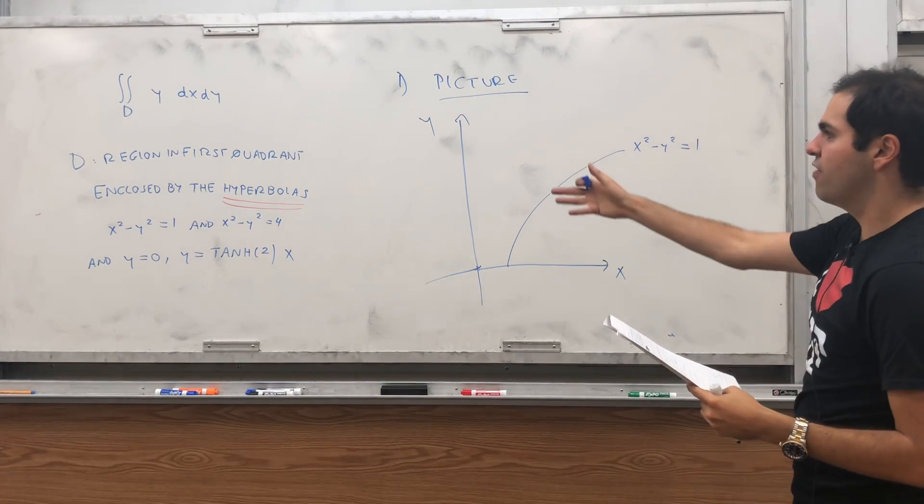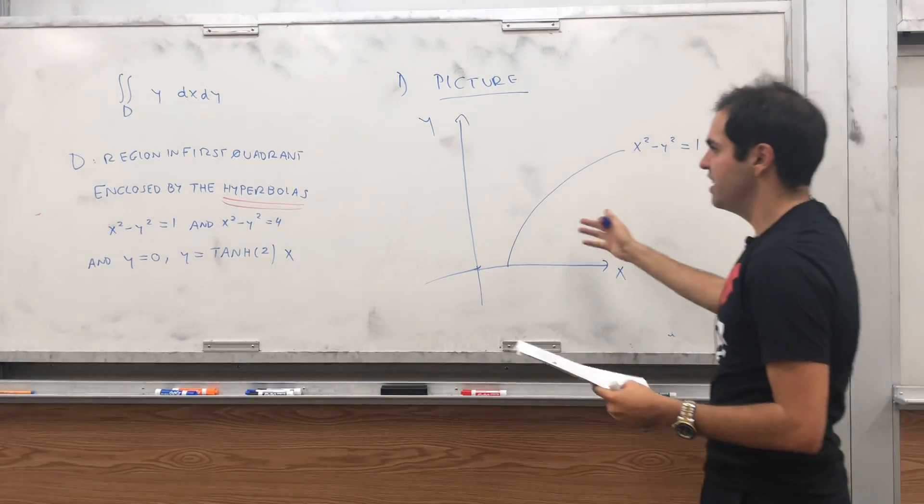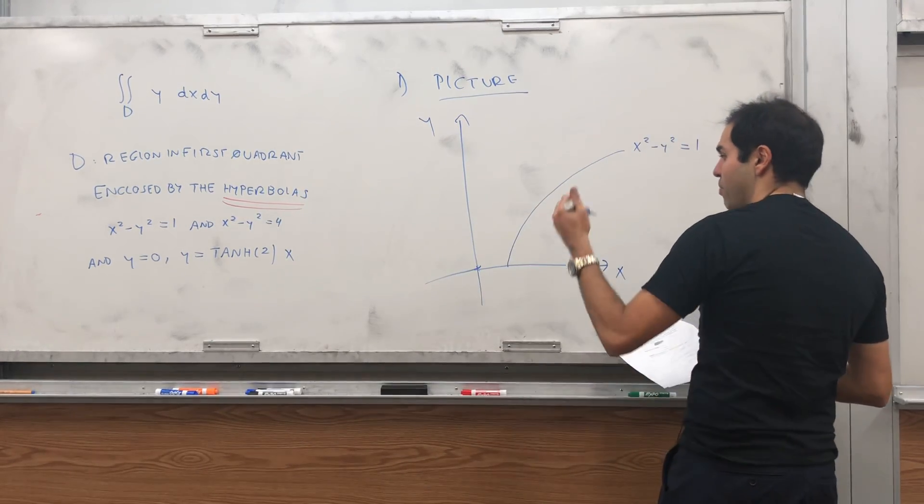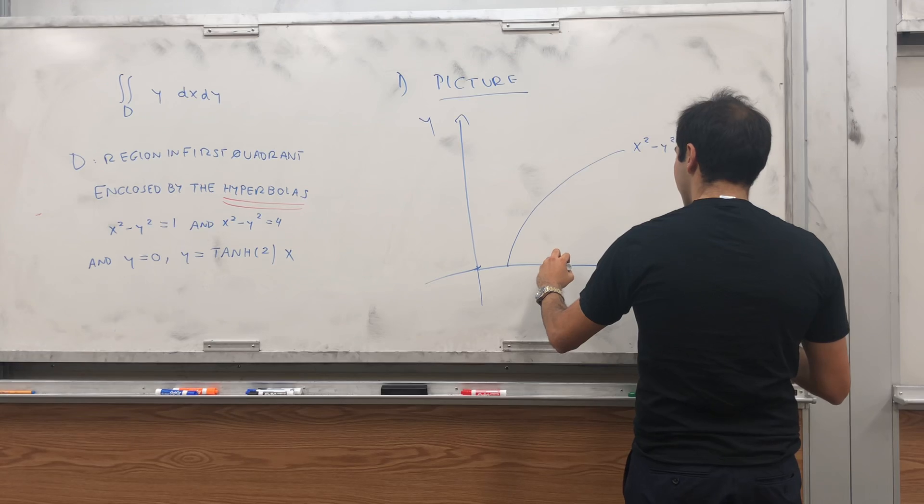On the other hand, you have x squared minus y squared equals to 4. And notice if y is 0, this gives you x is plus or minus 2. So, it starts here.